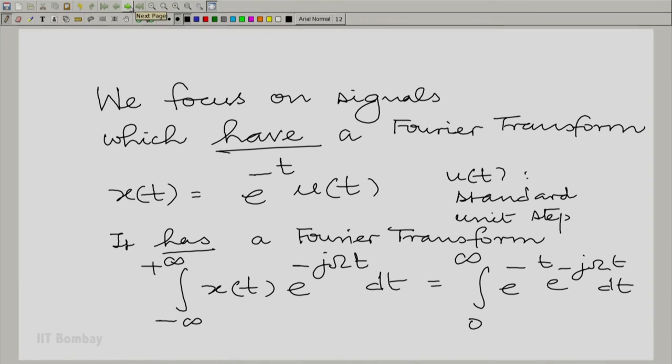All that you have to do is multiply x(t) by e^(-jωt) and integrate with respect to t. We have done this before in module 2, and that boils down to this expression integrating only from 0 to infinity. This becomes the integral from 0 to infinity of e^(-(1+jω)t) dt, and this is very easy to evaluate.